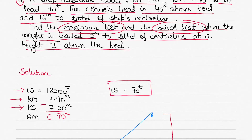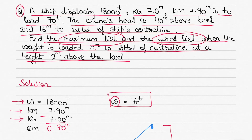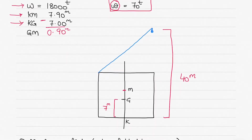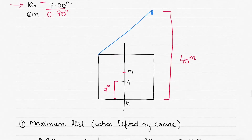The weight to be loaded is denoted by a small w, written differently from capital W for displacement. With any ship stability question, I like to draw diagrams. The diagram doesn't have to be very good or to scale, but it helps me visualize what is going on in the question and helps me form the equations as well. I'll explain the diagram as we start solving.